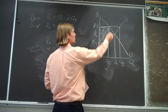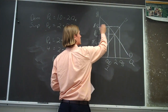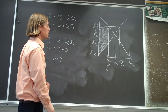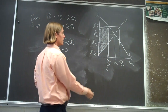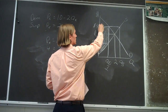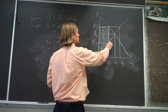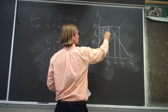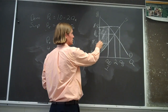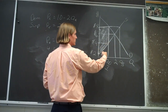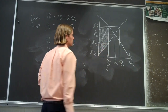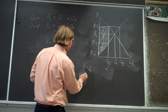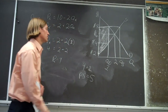Now that we have all these points, we can calculate the area. The rectangle area should be one times four, which is four. Then the triangle is two times one divided by two, which equals one. So four plus one — the producer surplus is equal to five.